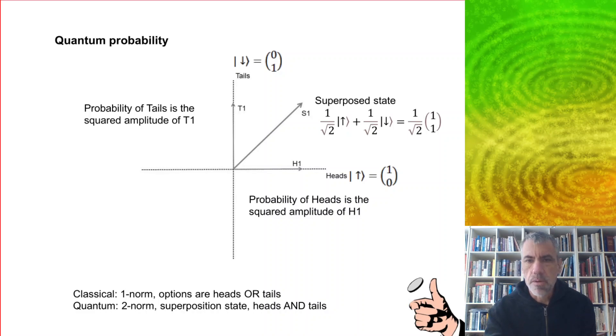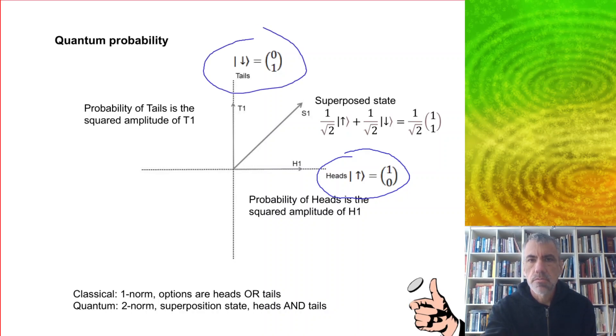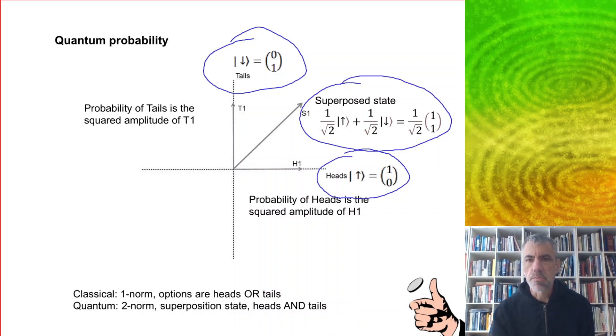So we can represent heads as an up arrow, and these brackets are the Dirac notation, which is used in quantum mechanics, or as a vector one, zero, and tails can be a down arrow, or it can be a vector zero, one. And our superposed state is a mix of these two, a balanced mix of up or down.